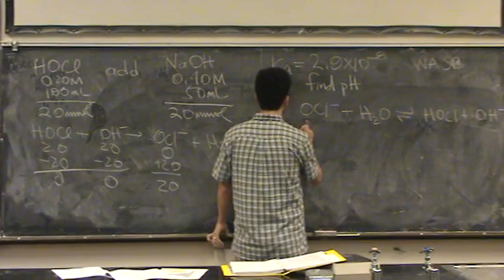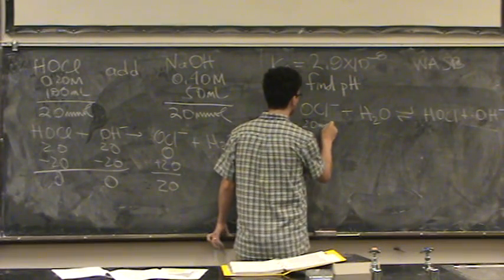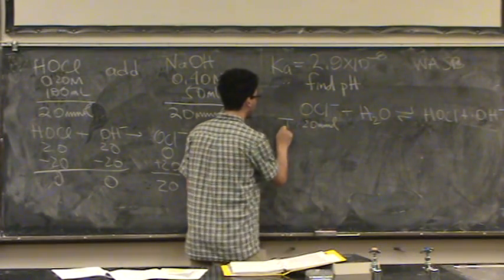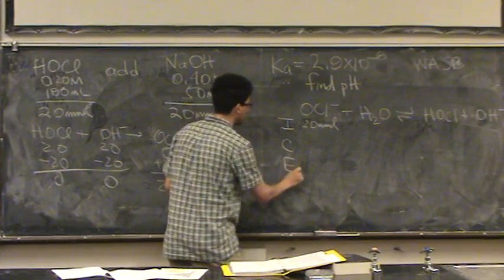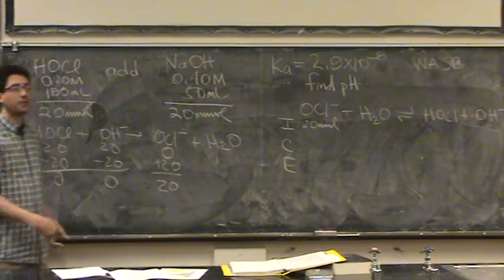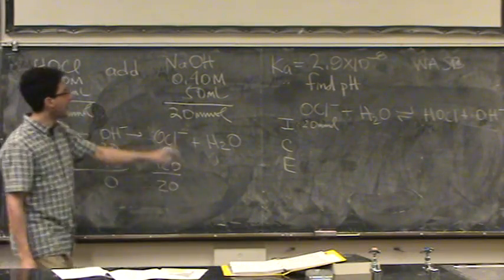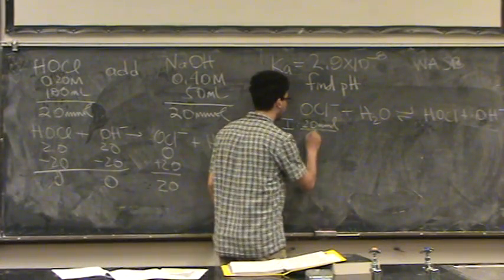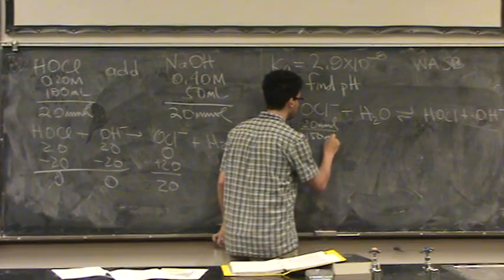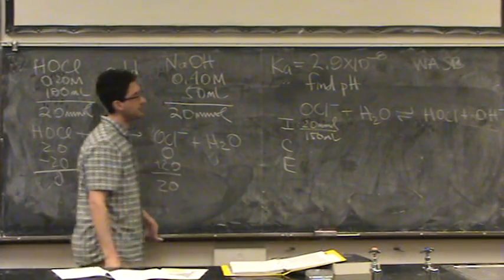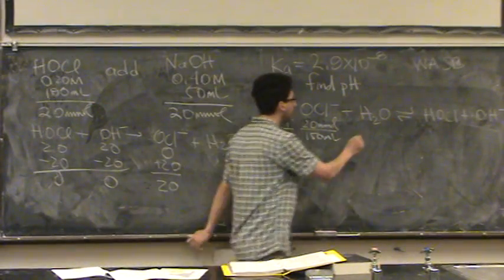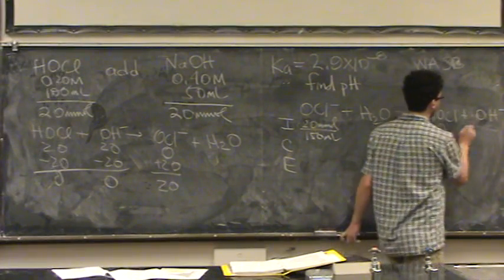So, how much do I have? Well, I have 20 millimoles. And for the ice table, I've got to use molarity. Or, I encourage you to use molarity. I have 100 initially. I added 50. That's a total of 150 milliliters for the eye line. I ignore water. Zero and zero.